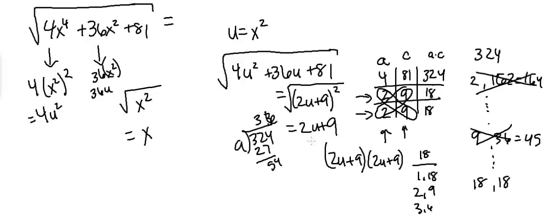So now we can't leave this in terms of u because the problem is in terms of x squared. So now all we're going to do is plug back in x squared for u, and we're going to get equals 2x squared plus 9.